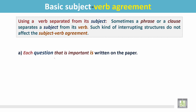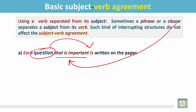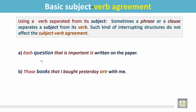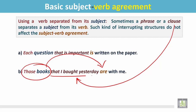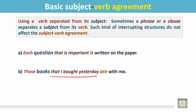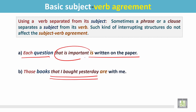We can also write these sentences: 'Each question that is important is written on the paper.' The subject 'each question' is separated from its verb by a clause in between. Another example: 'Those books that I bought yesterday are with me.' The subject 'those books' is separated from its verb 'are' by the clause 'that I bought yesterday'. If we remove the clause, we can say: 'Those books are with me' and 'Each question is written on the paper.' In both cases, removing the clause still leaves a complete sentence.